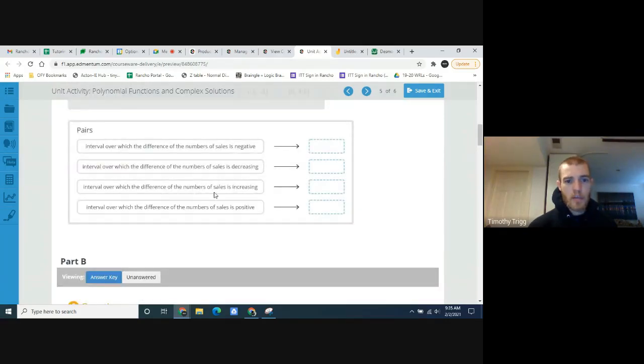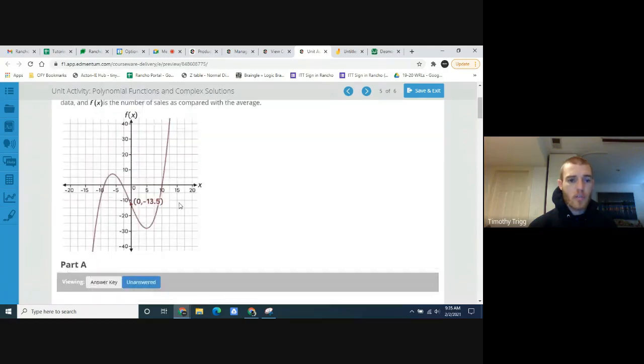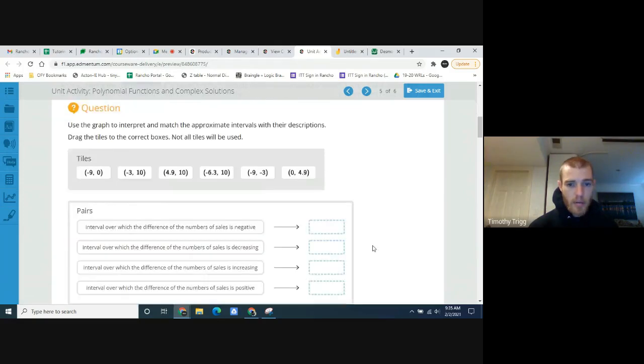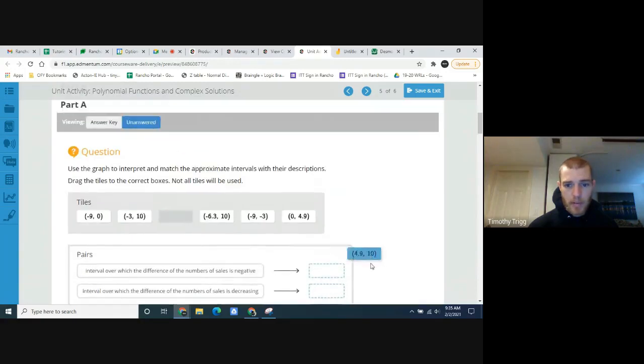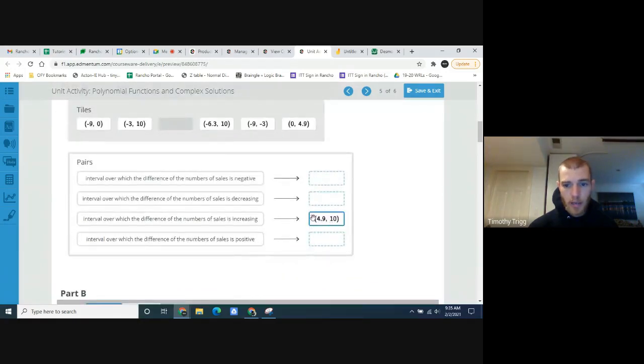Interval over which the difference of the number of sales is increasing. So increasing goes from here and starts going up. So from 5 and up. Maybe they're looking for this. From 4.9 to 10.